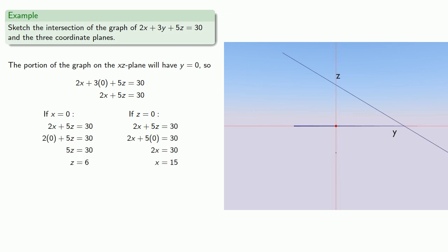And so this equation will correspond to the line going through 0, 0, 6 and 15, 0, 0.